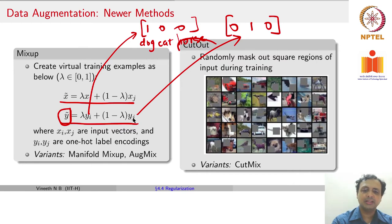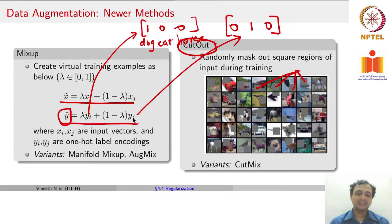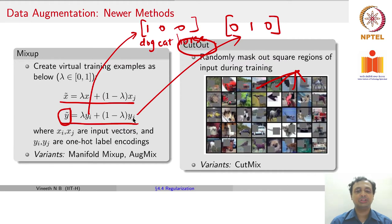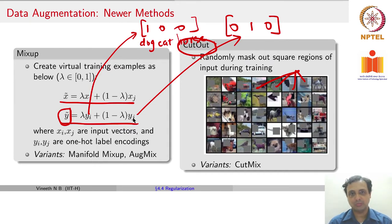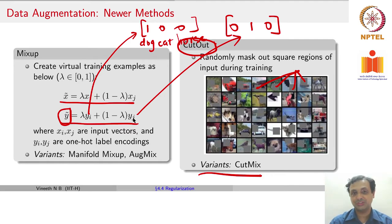Another popular method today is known as cutout, where you randomly mask out square regions of the input. These are grey boxes that mask out certain regions during training. You fill those locations with black and let the neural network train on that. Even these kinds of augmentations have shown fairly good generalization performance. A more recent variant is also called CutMix, and there are many other follow-up methods, but these are the broad ones you should know.